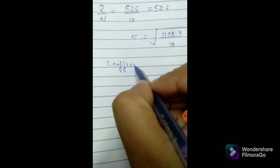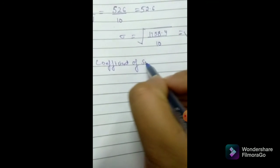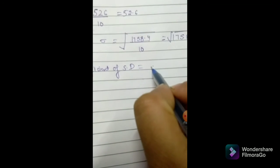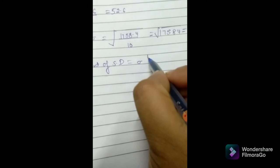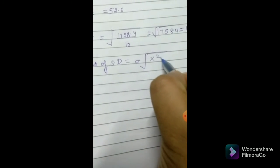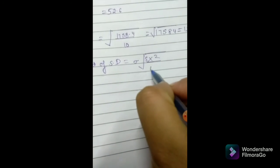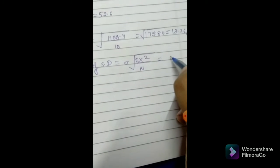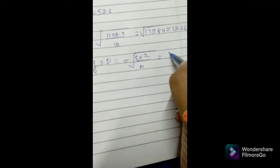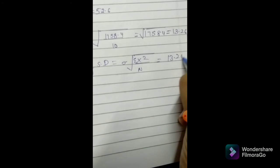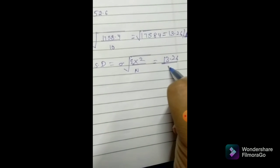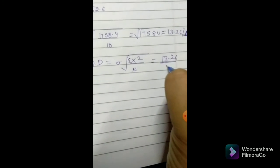Now we'll calculate the coefficient of standard deviation. The formula is sigma (standard deviation) divided by x̄. Our x̄ is 52.6, so 13.26 divided by 52.6 will be 0.25, which will be our answer.